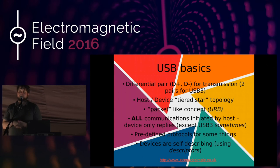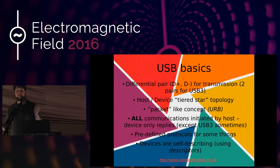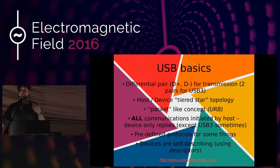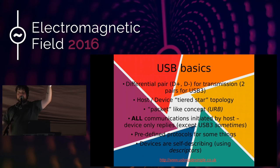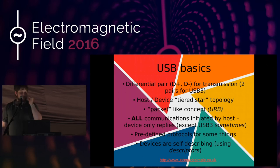The devices are connected in what's called a tiered star topology — you have one hub, plug several into that, and you can plug several into that. One important thing about USB: all communications in USB, except for USB 3, are initiated by the host. Even if you have something like a mouse or keyboard where you'd expect that pressing a button sends a signal to the computer — no. What's actually happening is USB has a host and a device relationship. A device cannot do anything on its own, it has to be told what to do. Even on a keyboard, the host is asking: 'Has he pressed the button yet?' And the keyboard says yes, it's Q, or no.